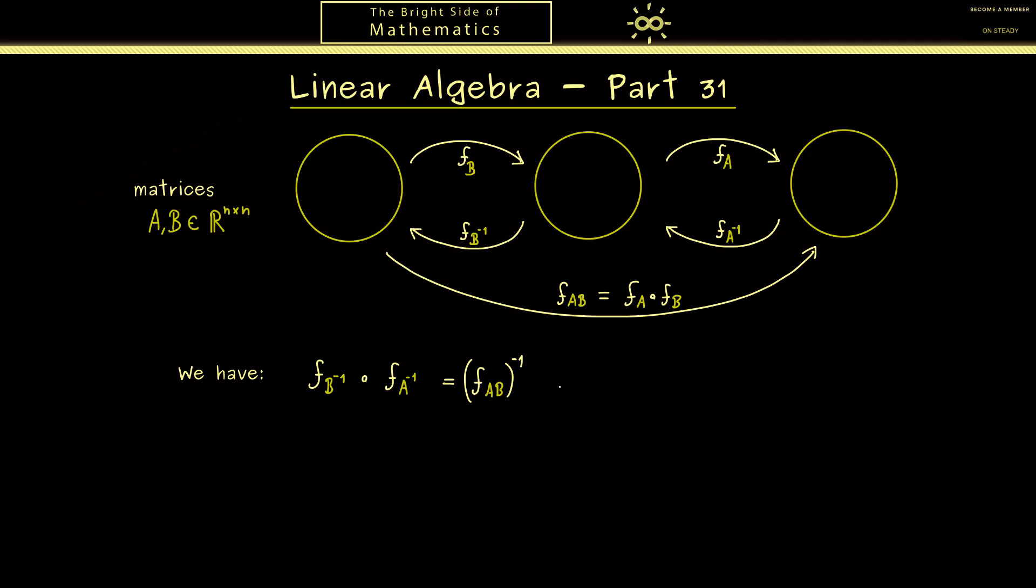In other words we can conclude a very important fact for the matrix product. If we want to calculate the inverse of AB we have to change the order in the matrix product. More concretely this is B inverse times A inverse. So indeed this is an important fact you definitely should remember. However, this was just the introduction of this video.